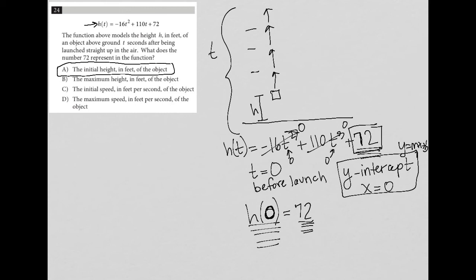Choice B says 'the maximum height in feet of the object.' That can't be true. I don't know how high this object will go, but it will go higher than where it starts. Plugging a t value in here and here is going to make this go up to some degree. So B is out.